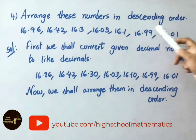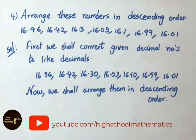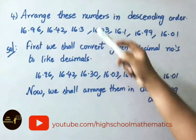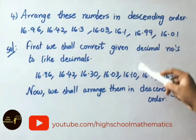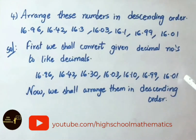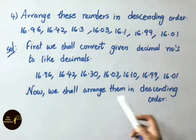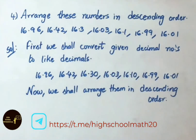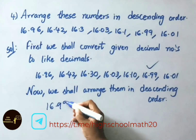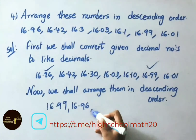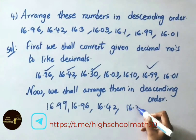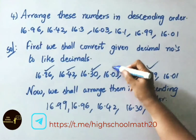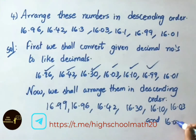See question 4: arrange these numbers in descending order. Descending order means arranging numbers from greatest to smallest. First convert to like decimals: 16.96, 16.42, 16.30, 16.03, 16.10, 16.99, and 16.01 — all having 2 decimal places. Now arrange in descending order: 16.99, 16.96, 16.42, 16.30, 16.10, 16.03, 16.01. The given decimals are now arranged in descending order.